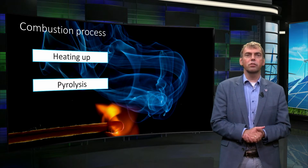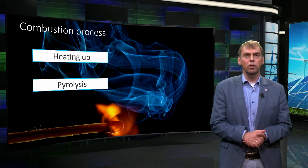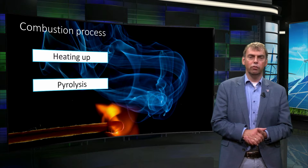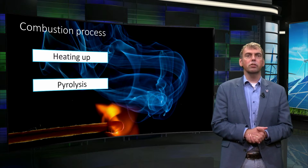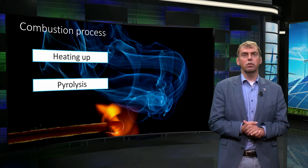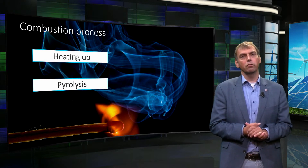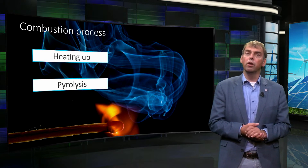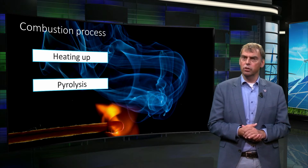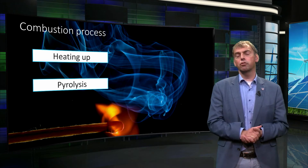In this process, thermal decomposition of the fuel takes place under fuel-rich conditions. The products formed in the fuel devolatilization process are water vapor, a mix of hydrocarbons, carbon oxides, and a multitude of chemical organic compounds that include hydrogen, sulfur, and nitrogen. In addition to this, a solid residue is formed, which is called char.